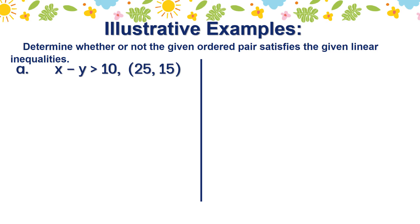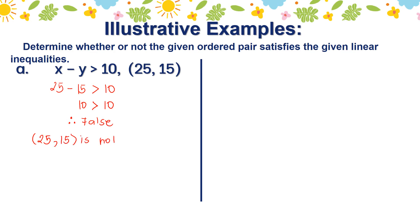Illustrative examples. Determine whether or not the given ordered pair satisfies the given linear inequalities. For letter A, we have x minus y is greater than 10, and the ordered pair (25, 15). We substitute: 25 minus 15 is greater than 10. That gives us 10 greater than 10. Is 10 greater than 10? The answer is false. So we can say that (25, 15) is not a solution.